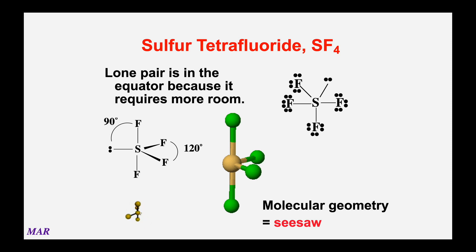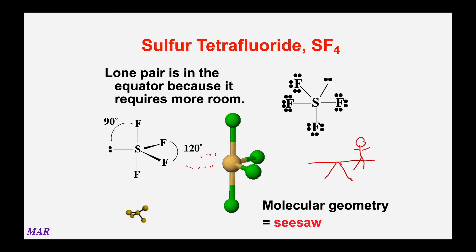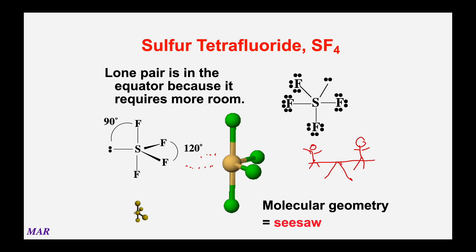The seesaw comes from the fact that it kind of looks like a seesaw you played on as a kid. Carbon in CF4 would always be tetrahedral, and we're going to see a lot of tetrahedral things. However, sulfur has two more electrons than carbon, which is why you get this trigonal bipyramid slash seesaw. Just make sure you count your valence electrons and you'll have no problem.